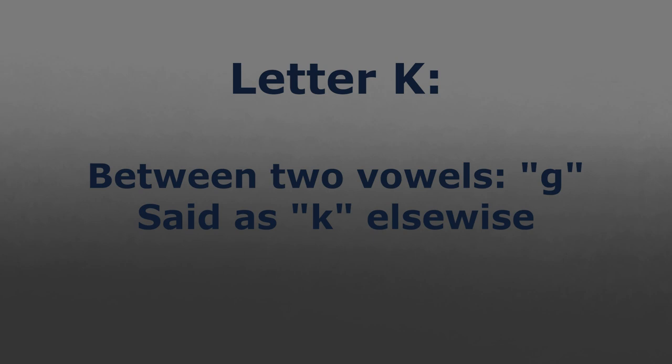K will have a different sound depending on its circumstance. If it is between two vowels, it will become a G sound. This is because phonetically speaking, K and G are very similar sounds. K does not use vibrating vocal cords, while G does.